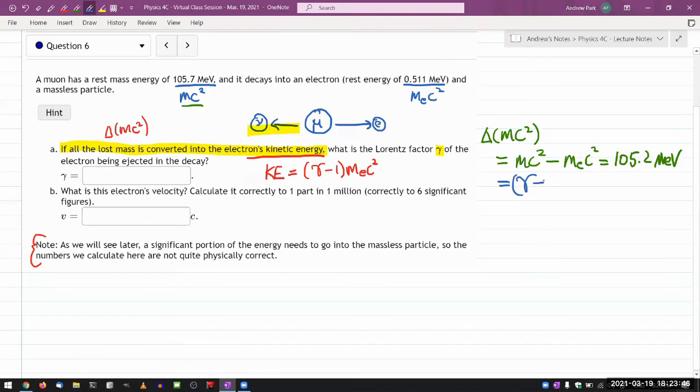Gamma minus one mc squared. So I can solve for gamma minus one. Gamma minus one is equal to this quantity, 105.2 mEV divided by, oh yeah, careful, this is the unit quantity. The mass of the electron times c squared. And this is just a numerical quantity, 0.511 mEV. So I guess I can just do this in the calculator. So when I do this number, it's going to give me something close to 200, more or less.